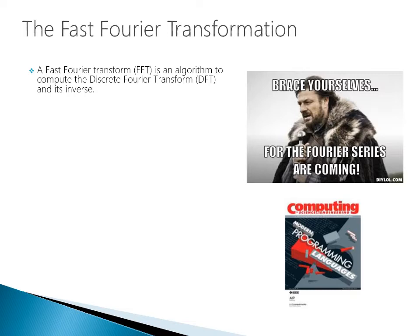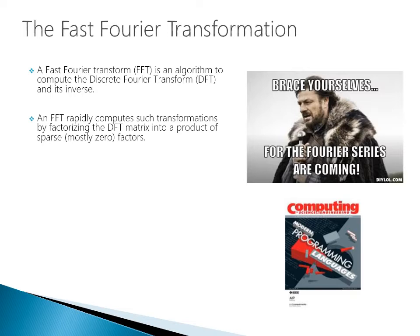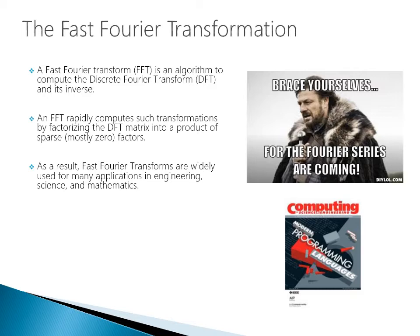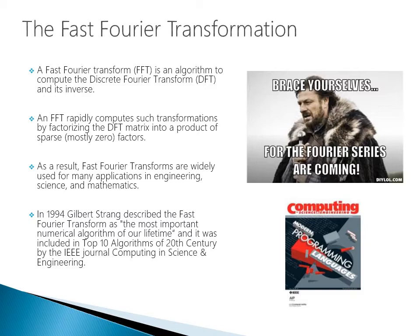Now we get into the Fast Fourier Transform, or FFT — an algorithm to compute the discrete Fourier transform and its inverse. It rapidly computes transformations by factoring the DFT matrix into a product of sparse, mostly-zero factors. In 1994, Gilbert Strang described the FFT as the most important numerical algorithm of our lifetime, and it was included in the top 10 algorithms of the 20th century by the IEEE Journal of Computing and Science and Engineering.